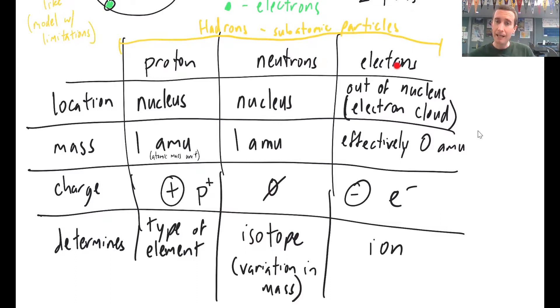And then finally, the electrons determine the ion. So that's something with a charge. Is it a positive charge, a negative charge, or a neutral charge? And how positive or negative is it? That's based on how many extra electrons or how many missing electrons away from neutral it has.